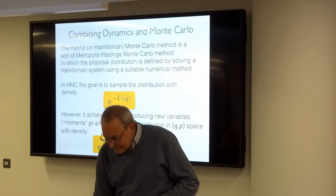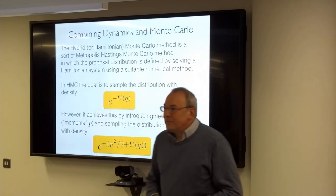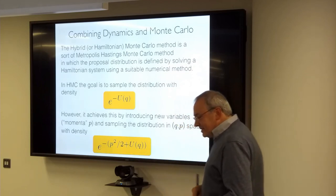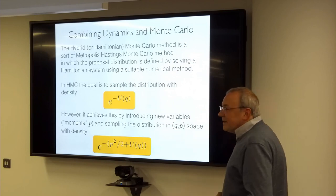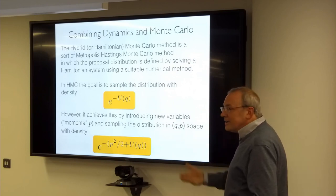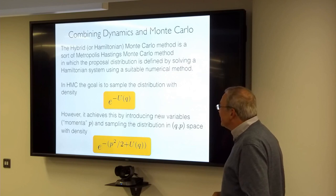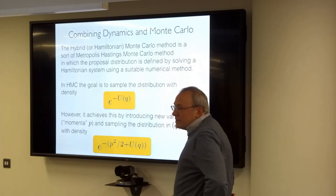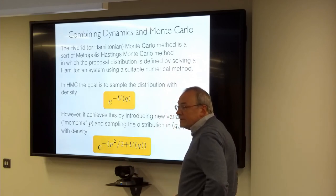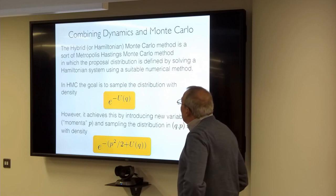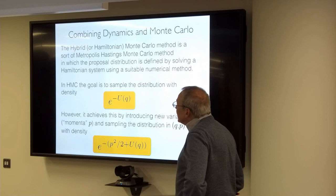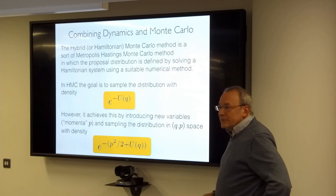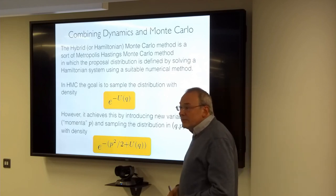Now I'll talk about something a little embarrassing — the inventor of this method is sitting right back there: Tony Kennedy. This is called Hamiltonian Monte Carlo, and it's very popular for sampling, including in data science. The idea is to use a Hamiltonian system solved by a suitable numerical method to define a proposal distribution, then combine that with the Metropolis-Hastings test.